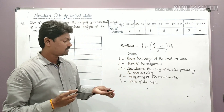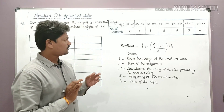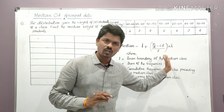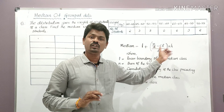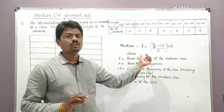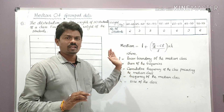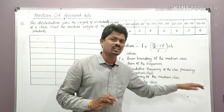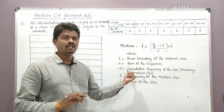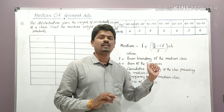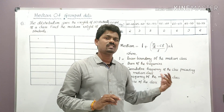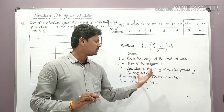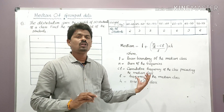So these are the terms involved in the formula. Once again: Median = L + (n/2 − cf) / f × h, where L = lower boundary of the median class, n = sum of the frequencies, cf = cumulative frequency of the class preceding the median class, f = frequency of the median class, and h = size of the class.